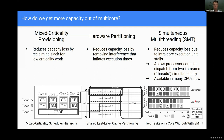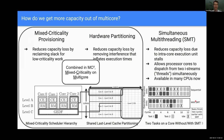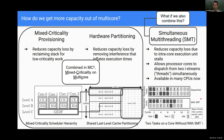We have already looked in prior work at UNC at combining mixed criticality provisioning with hardware partitioning — our framework is called mixed criticality on multi-core, or MC². We have yet to consider the addition of simultaneous multithreading, and so in our work we try combining SMT with mixed criticality provisioning and hardware partitioning.